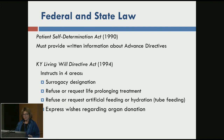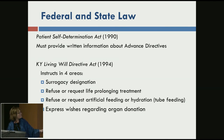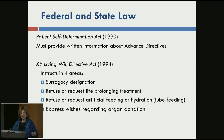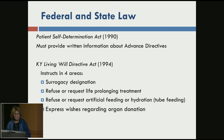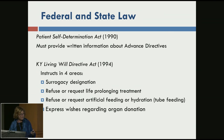The Patient Self-Determination Act, a direct response to the Cruzan case, obligates healthcare providers and institutions to provide written information to patients about advance directives — that's one of the reasons UK patient information forms ask whether you have one. The Kentucky Living Will Directive Act was passed in 1994 and instructs in four areas: surrogacy designation, refusal or request of life-prolonging treatment, artificial nutrition, and wishes about organ donation. The biggest problems we have are in fully determining who the surrogate ought to be.